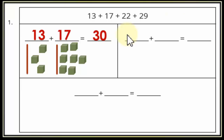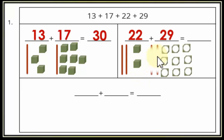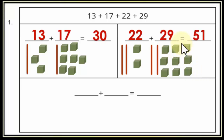تعالوا نشوف 22 و29. Express 22 as 2 sticks (2 tens) and 2 cubes (2 ones). Express 29 as 2 sticks (2 tens) and 9 cubes (9 ones). هنجمع الـones: 2+9 = 11. الـ11 دي هنكتب 1 في الـones وناخد الـ10 نزودهم على الـtens. 1+2+2 = 5 tens. يعني الناتج 51.